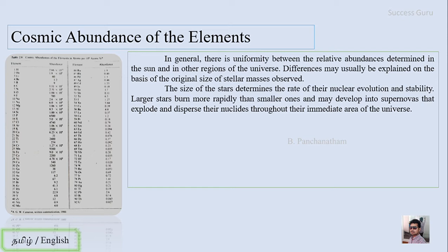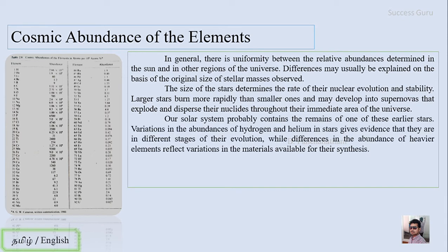The size of the stars determines the rate of their nuclear evolution and stability. Larger stars burn more rapidly than smaller ones and may develop into supernovae that explode and disperse their nuclei throughout the immediate area of the universe.